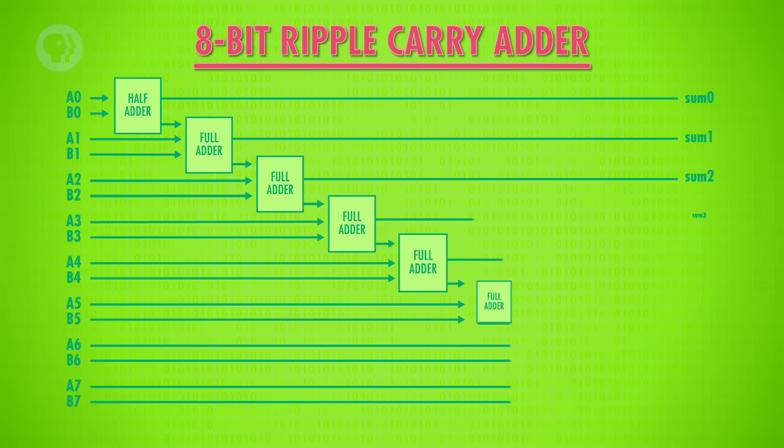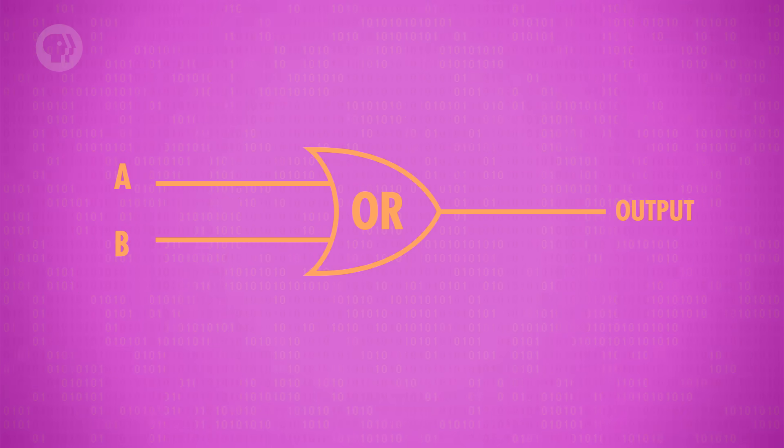All of the logic circuits we've discussed so far go in one direction, always flowing forward, like our 8-bit ripple adder from last episode. But we can also create circuits that loop back on themselves. Let's try taking an ordinary OR gate, and feed the output back into one of its inputs and see what happens.